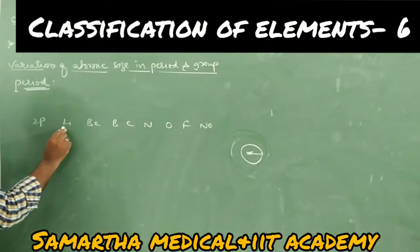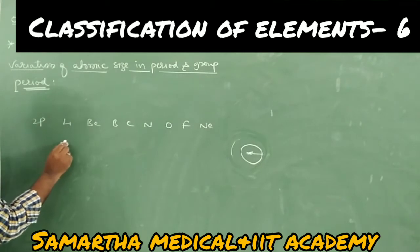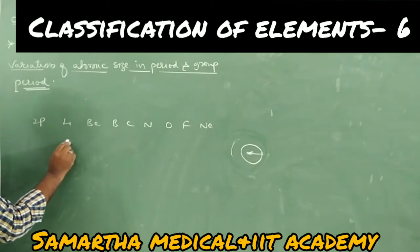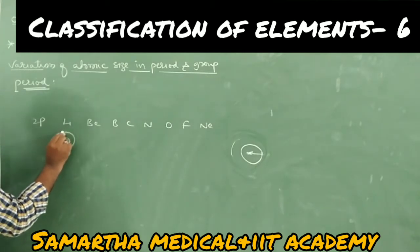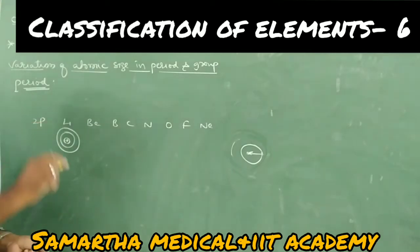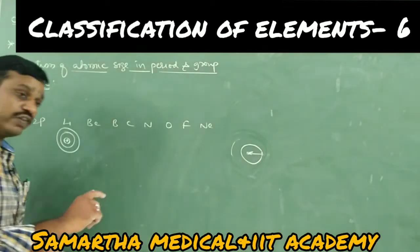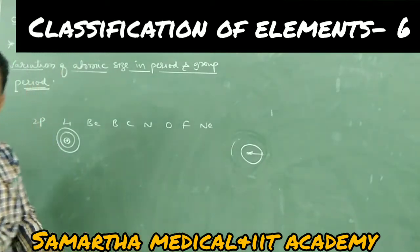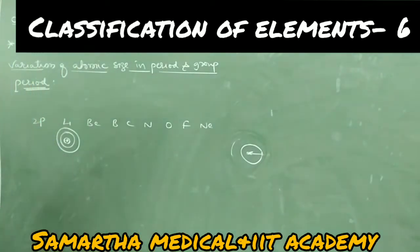All second period elements have two shells. All first period elements have one shell, and all seventh period elements have seven shells. The period number indicates the number of shells.